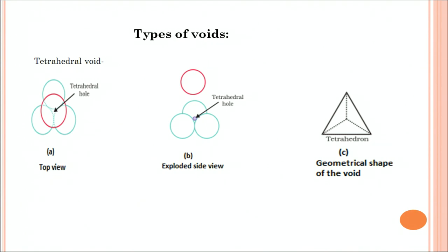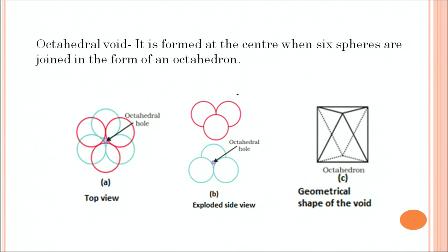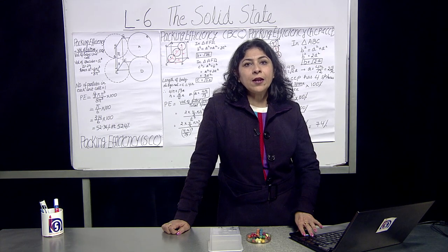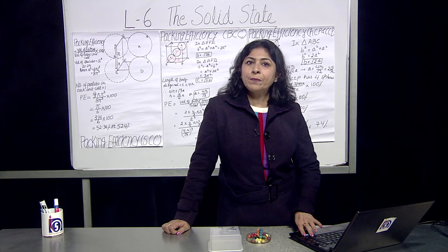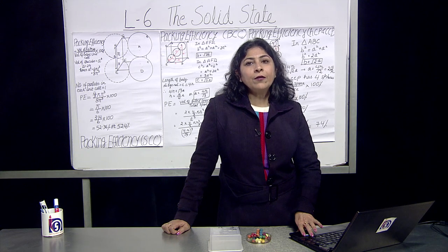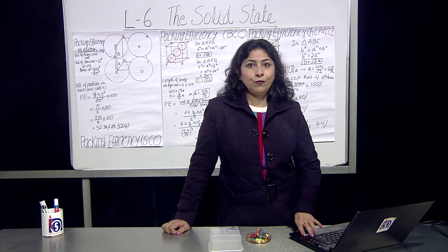That is the tetrahedral void you can see when we are putting in the groove. A tetrahedral hole is formed with a tetrahedral geometrical shape. The other void is formed at the center when six spheres are joined in the form of an octahedron — we get an octahedral void. In hexagonal closed packing and cubic closed packing arrangements, both octahedral and tetrahedral voids are present. The number of octahedral voids present in a lattice is equal to the number of closed packed particles, and the number of tetrahedral voids is twice the number of octahedral voids.